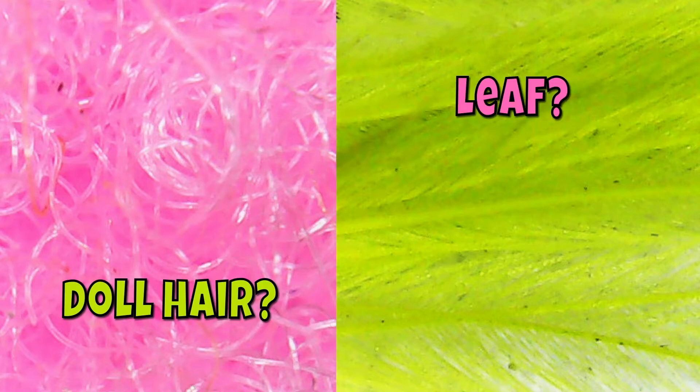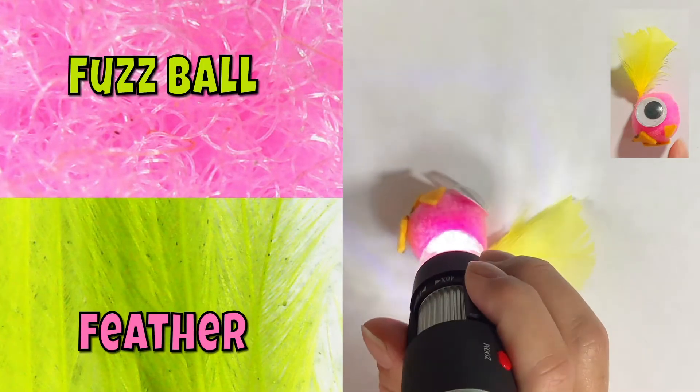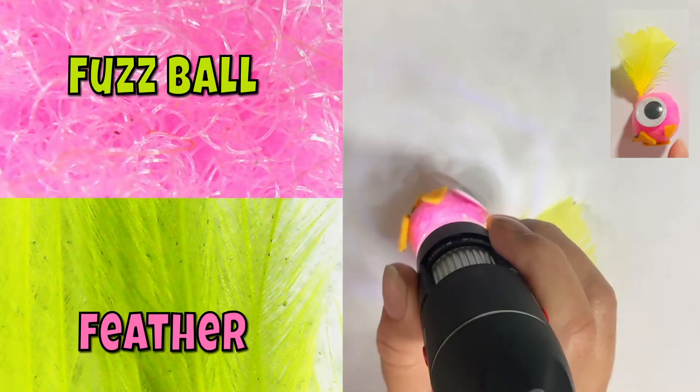That's doll hair, and that's like a leaf. It does look like a leaf, and it does look like doll hair. It's a good guess. Plastic doll hair and a leaf. Okay. So, that part's the feather, and then the pink part is the fuzzball.